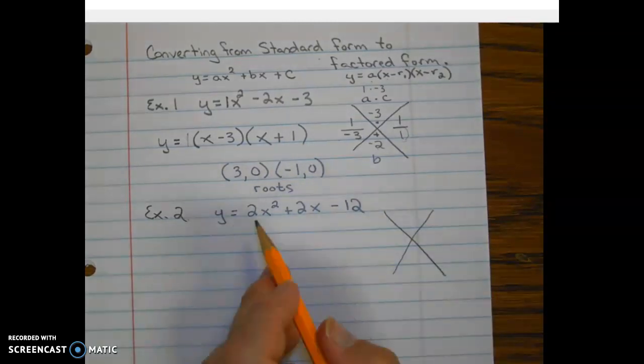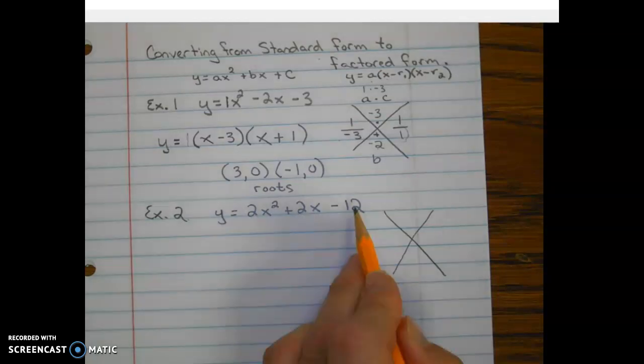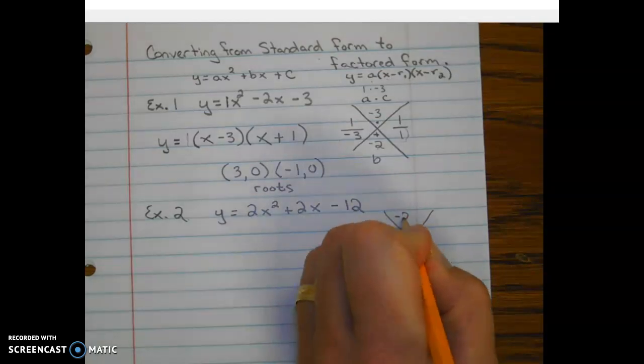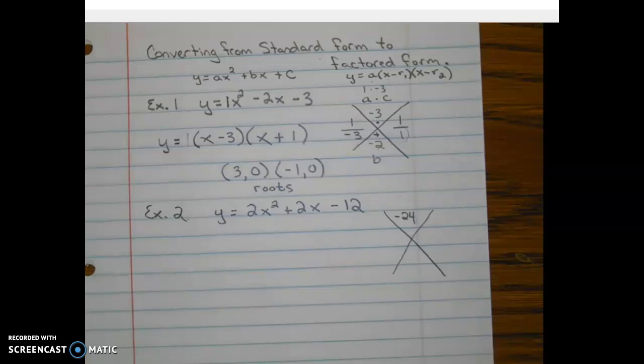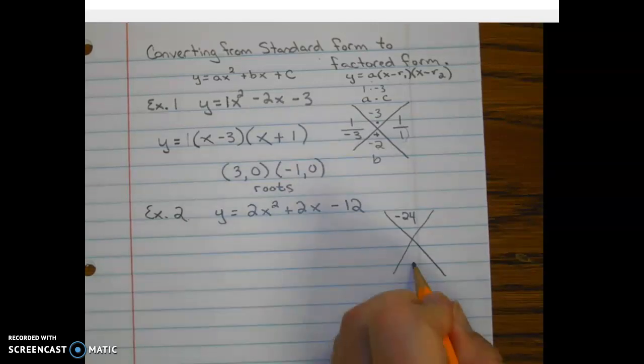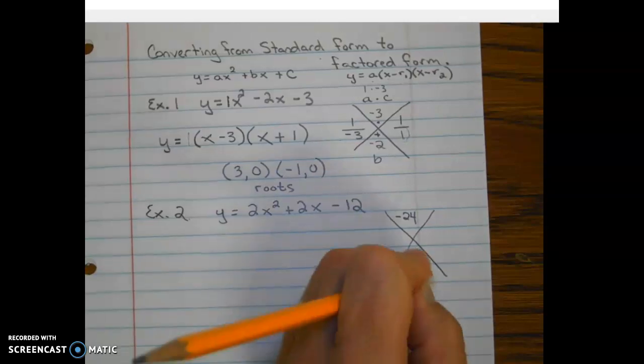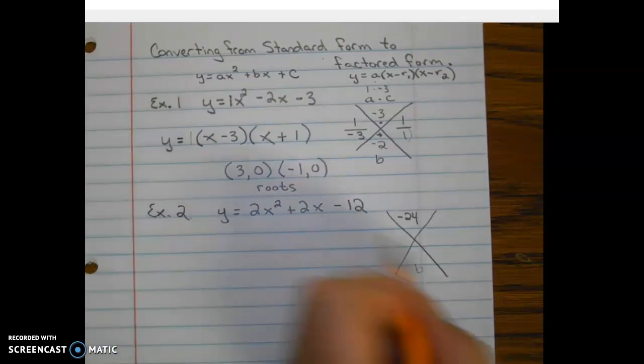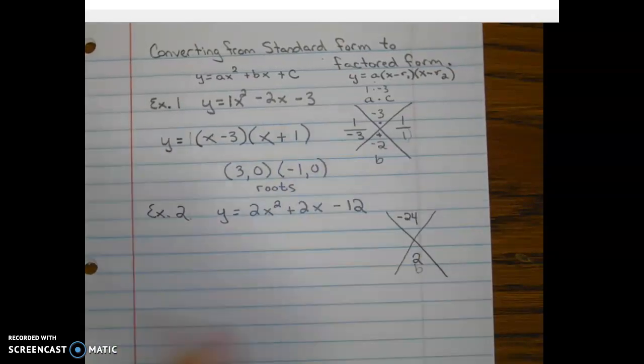And so we're going to multiply our A times our C. So we're going to have negative 24. And then our B value is going on the bottom, which is 2.